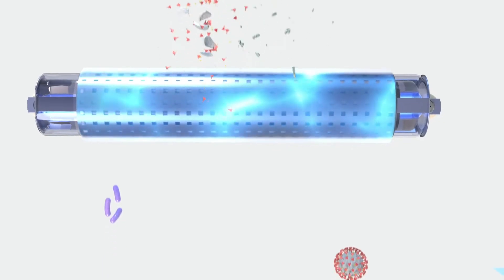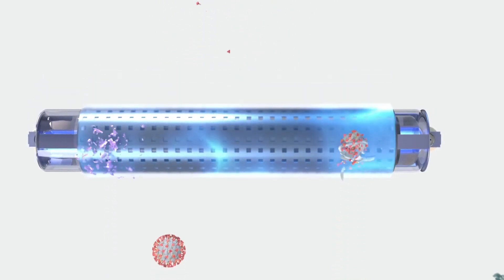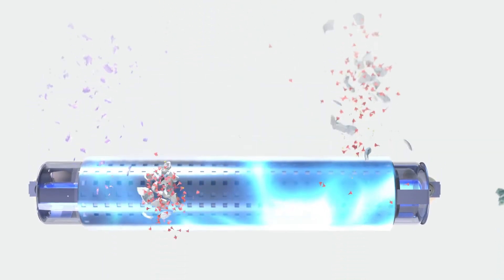Nanostrike's effectiveness lies within its ability to kill and deactivate even the smallest nano-sized pathogen on contact. As microorganisms pass through the Nanostrike plasma field, they are rendered inert and deactivated. Therefore, only harmless dead pathogen debris emerges from the field.